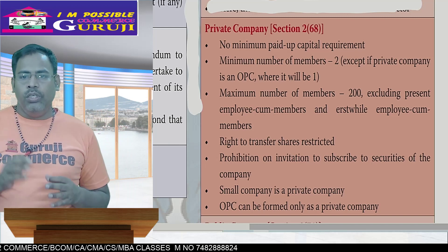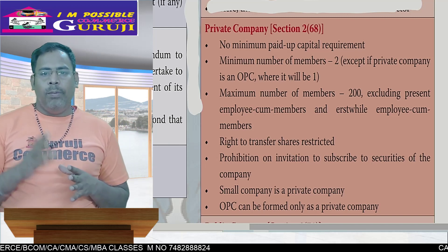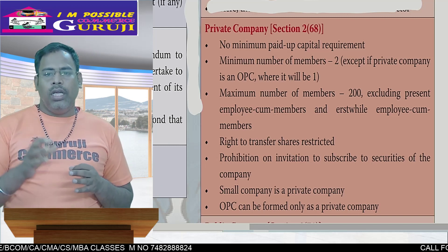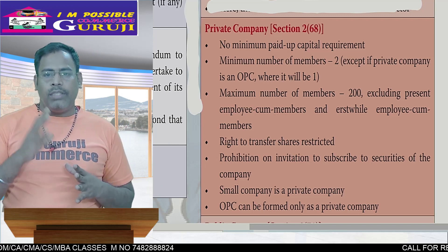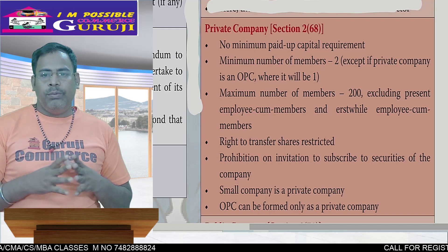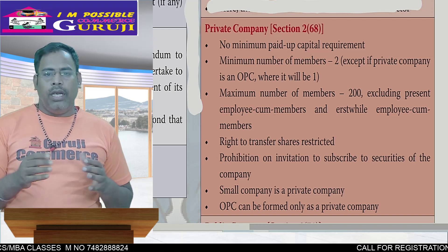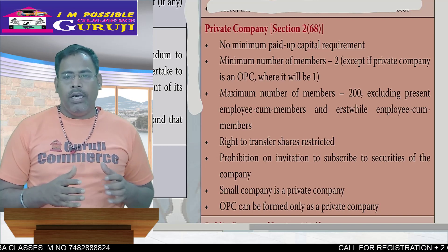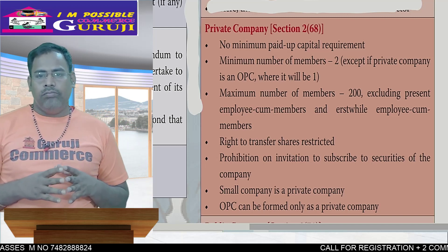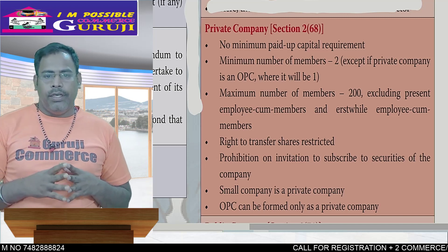Second: minimum members should be 2, except for a private company of OPC where there will be only one member. Maximum number of members will be 200, excluding the present employee-cum-member and past employee-cum-member.